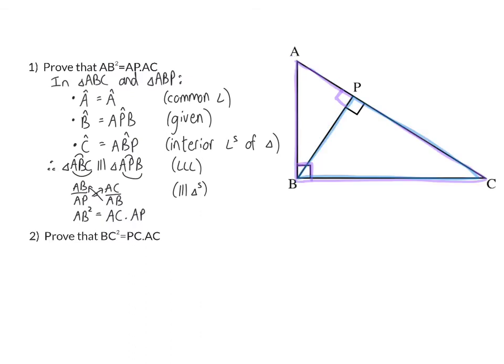Next, we are going to prove that BC squared is equal to PC times AC. And we're going to do that by proving that triangle ABC is now this time similar to triangle PBC. And our proof will look very similar to the one in number 1.